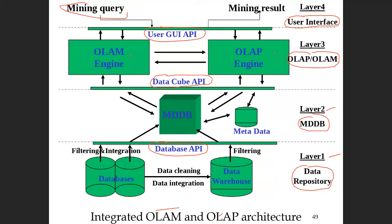Layer one is the data repository. Recall the basic concept of the data warehouse: it is a centralized database maintained at the center. It receives data from the entire organization — different databases or transaction databases from all branches of the organization.